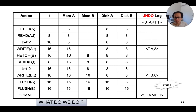The two flush actions at the end correspond to writing back the modified data elements from memory back to the disk. Now suppose the database system crashed in the middle of writing back one of the dirty elements to the disk, and before writing the commit record itself. What should we do during recovery?